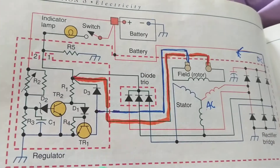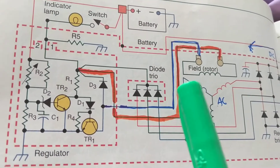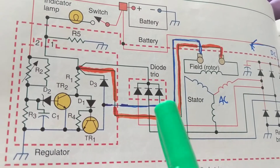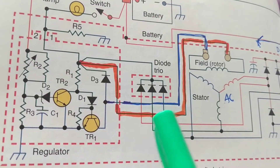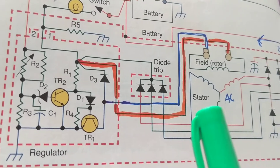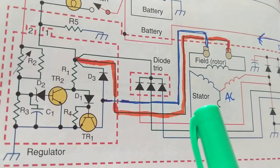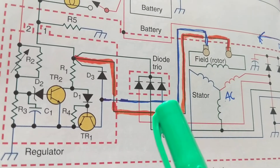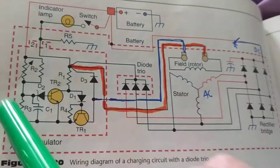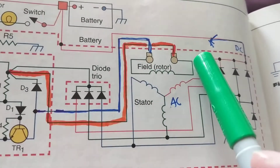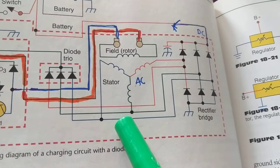Sometimes you're going to have the regulator on the inside, sometimes on the outside. When it's on the outside, it's going to be a computer board — the PCM — which is going to control the on and off times of the field of the rotor. When it's inside, you're only going to see a B+ coming out. Let's understand it even more.